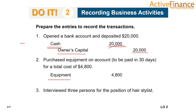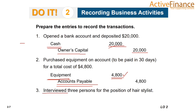Second transaction: equipment is purchased on credit for $4,800, to be paid within 30 days. We record Equipment on the debit side for $4,800 since assets increase, and Accounts Payable on the credit side for $4,800 since the equipment was purchased on credit. Third transaction — interviewing three persons for the position of hair stylist — will not be entered in the general journal because we cannot quantify this transaction in terms of money.